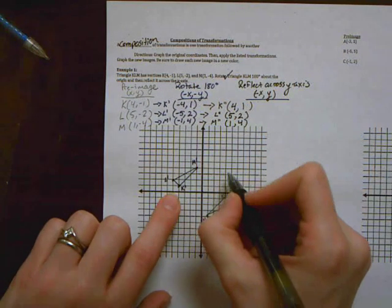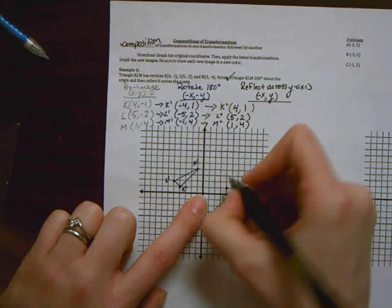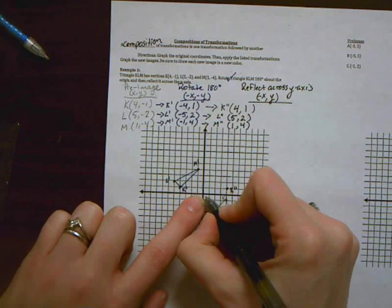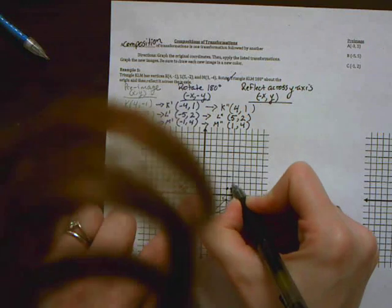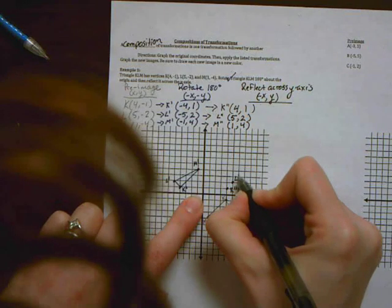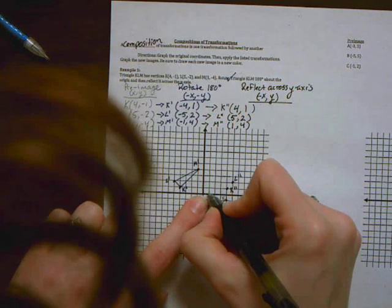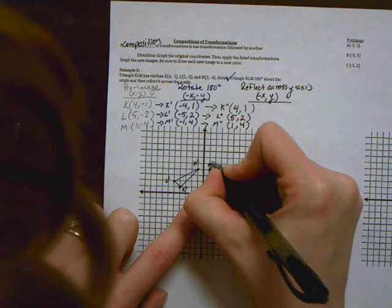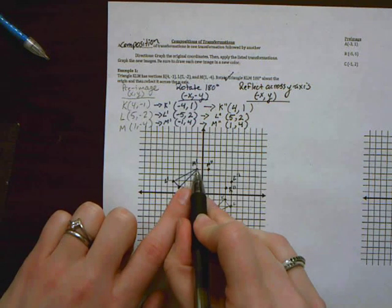So let's reflect it. 4, 1 is K double prime. 5, 2 is L double prime. And 1, 4 is M double prime.